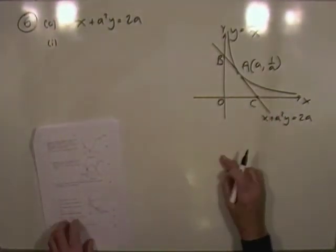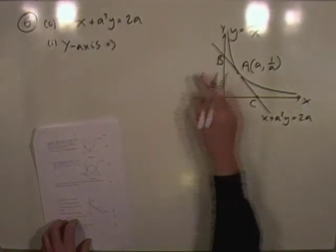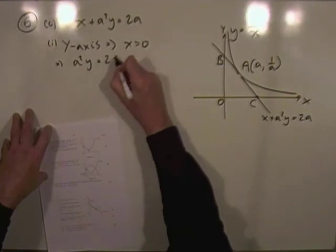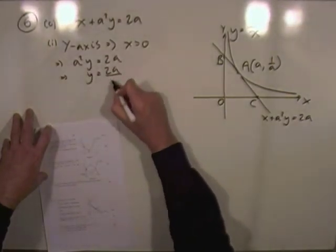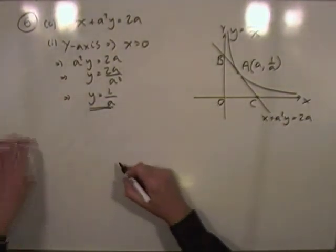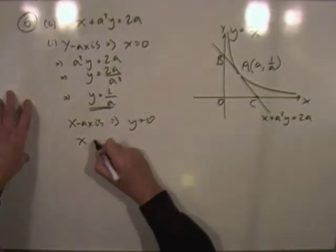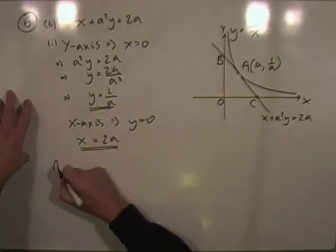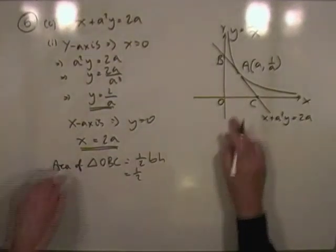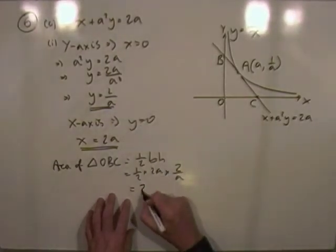Part c: find the area of triangle OBC where the tangent cuts the axes. On the y-axis, x = 0: a²y = 2a, so y = 2/a, giving B = (0, 2/a). On the x-axis, y = 0: x = 2a, giving C = (2a, 0). The area of triangle OBC is ½ × base × height = ½ × 2a × 2/a = 2 square units.